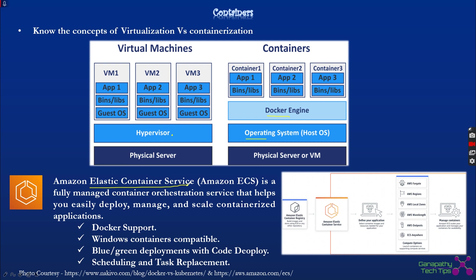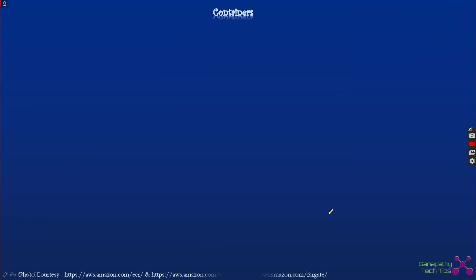AWS Elastic Container Service (ECS) is AWS's proprietary container orchestration service. Managing containers at scale is complex, requiring load balancing and scaling across many containers. While Kubernetes is a widely used open-source orchestration engine, ECS is the AWS-native alternative. It provides Docker and Windows support, blue/green deployments with zero downtime via AWS CodeDeploy, and handles scheduling and task replacement. Container images are pulled from the Elastic Container Registry (ECR) and deployed onto AWS Fargate or EC2.